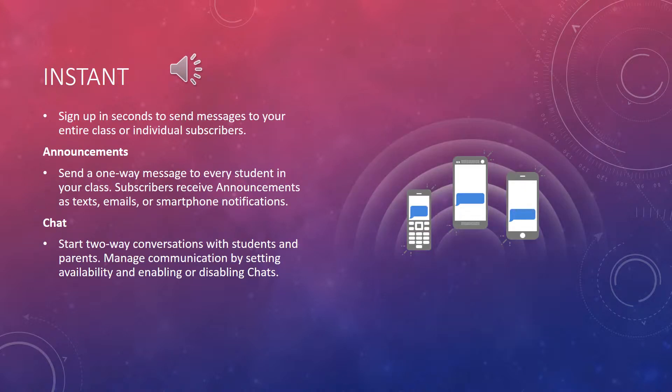The Remind app is instant. You can sign up in seconds to send messages to your entire class, team, or individual subscribers. Your announcements send one-way messages to every student or athlete in your class or on your team. The subscribers receive announcements as text, emails, or smartphone notifications.